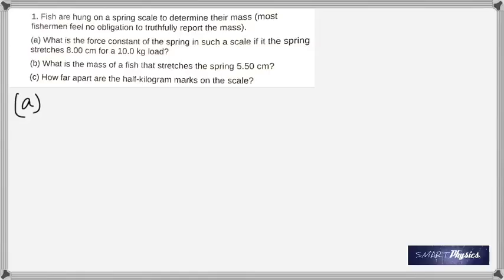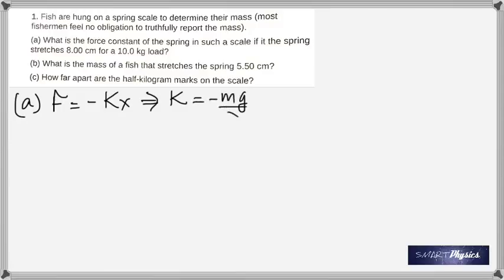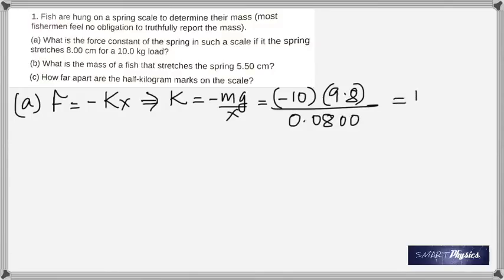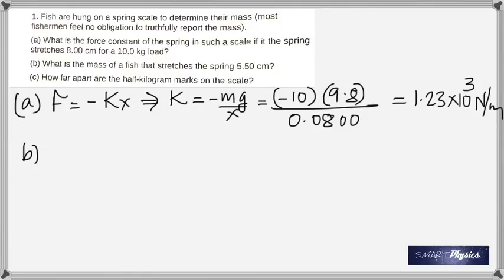The information given is X and the mass, which means you can find the force. So you have X and F, and you need to find K. K is minus F divided by X, which is minus mg divided by X, because force is m times g. The 0.08 is because you convert centimeters into meters, and you get 1.23 times 10 to the 3. The unit for K is Newtons per meter.